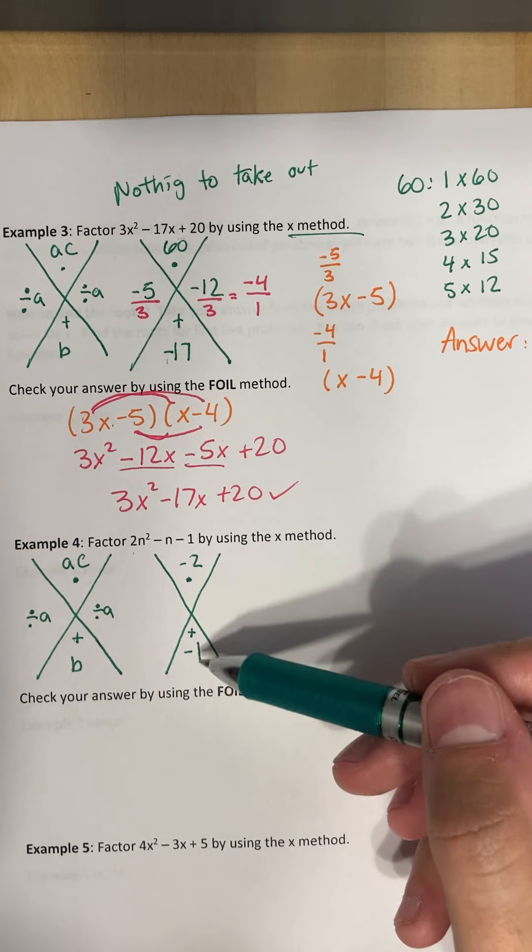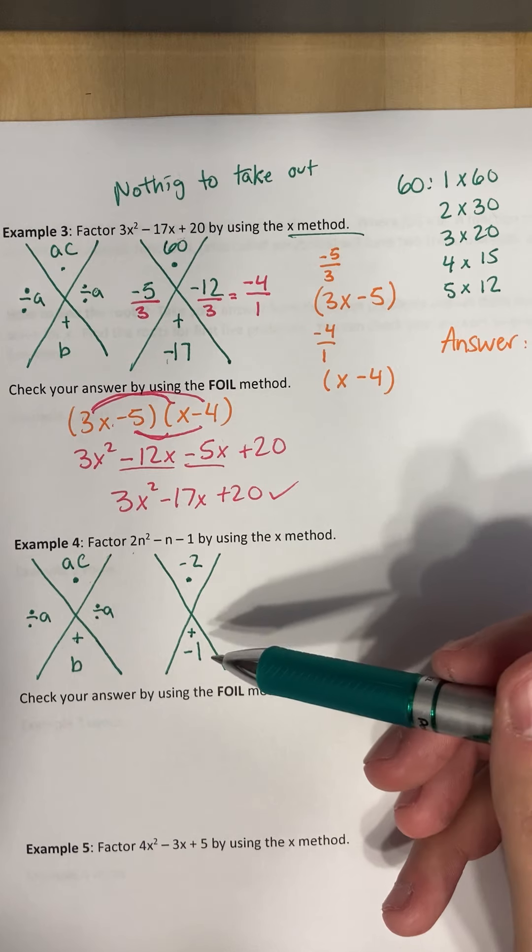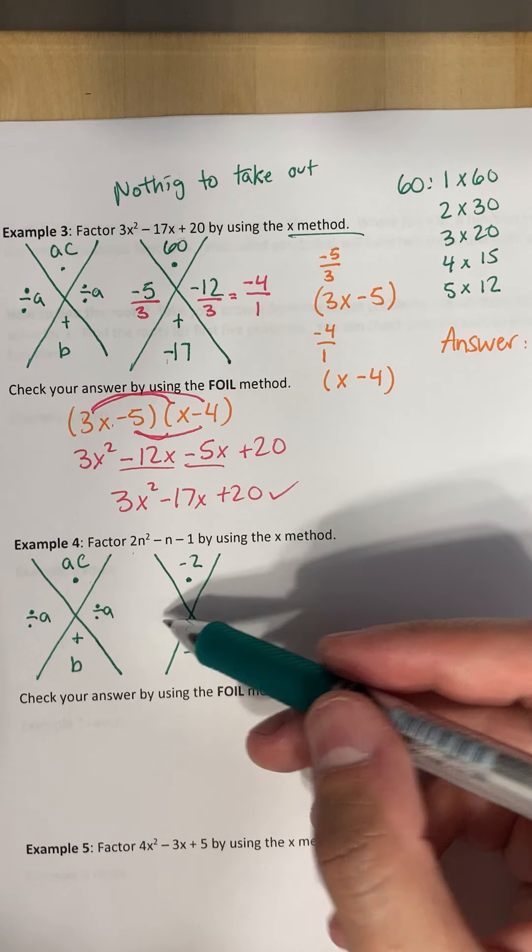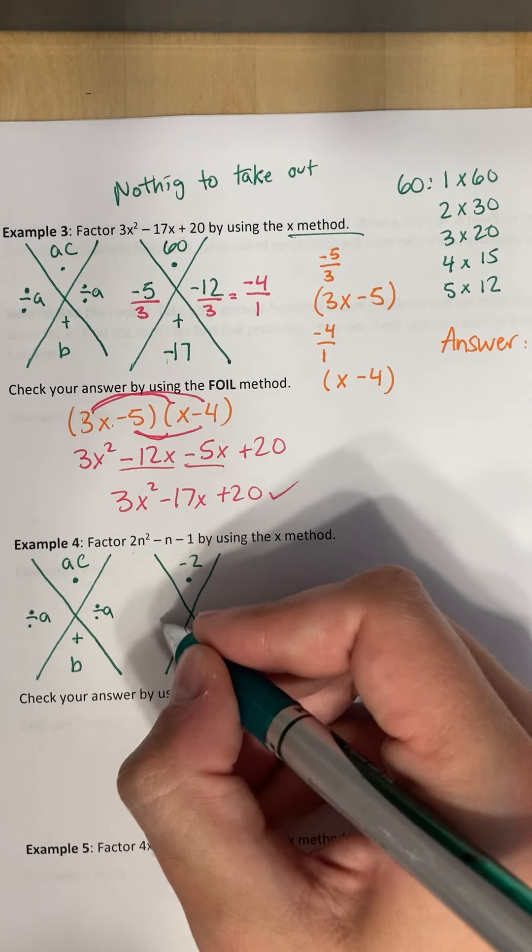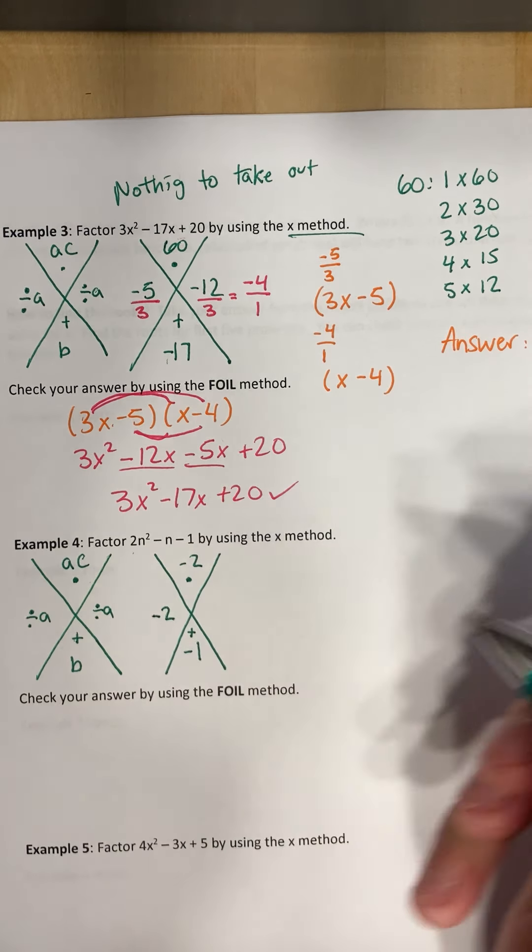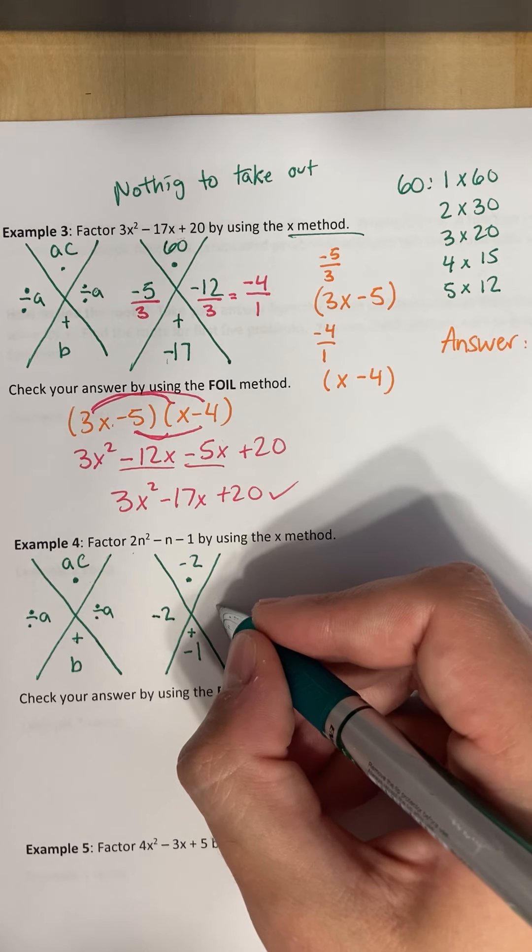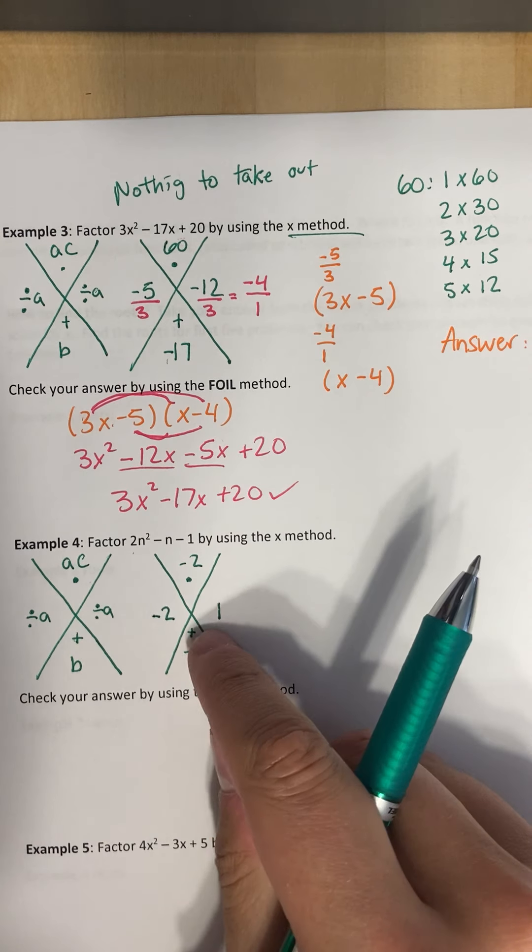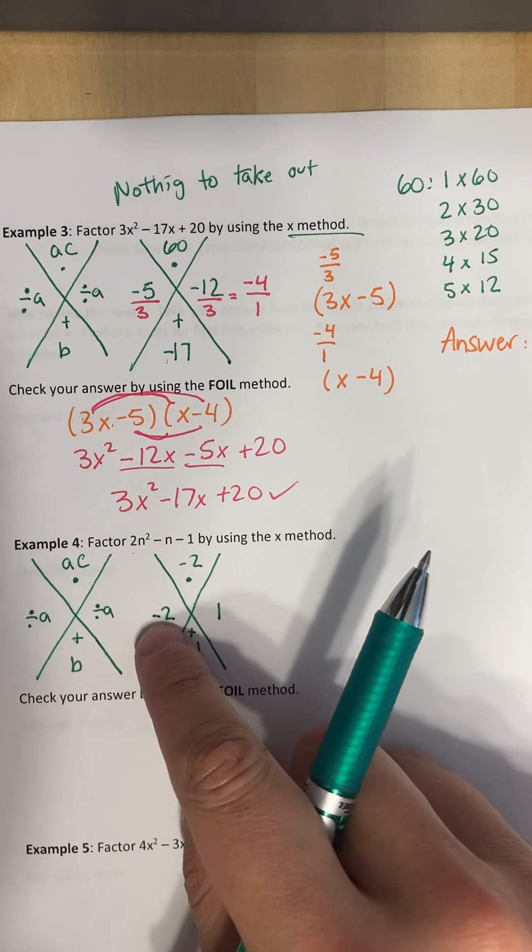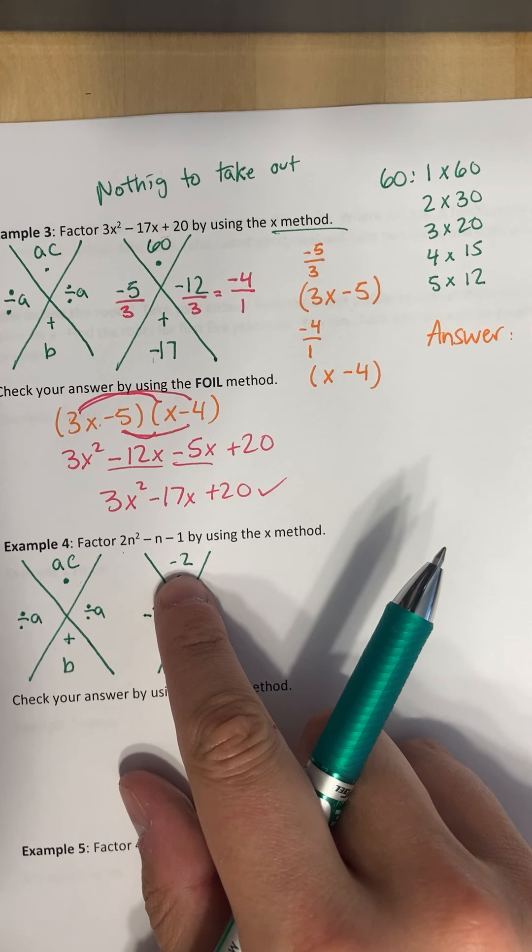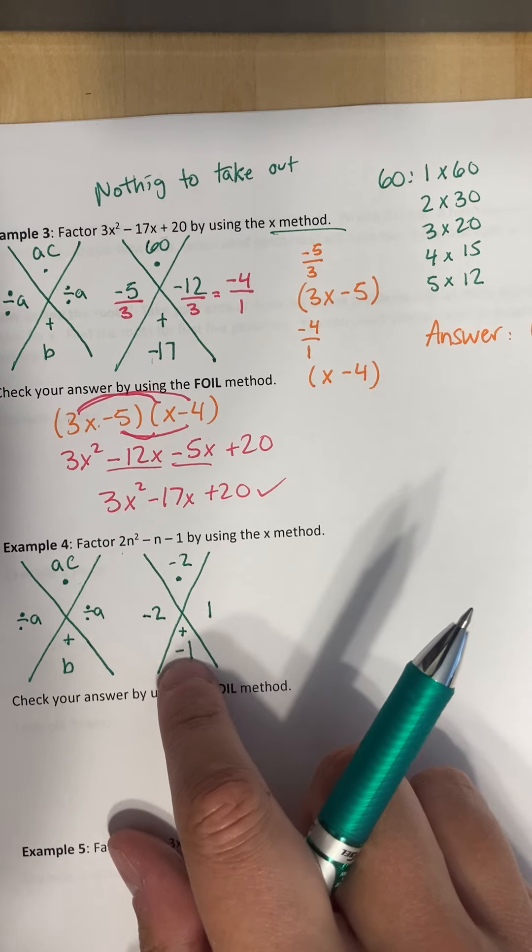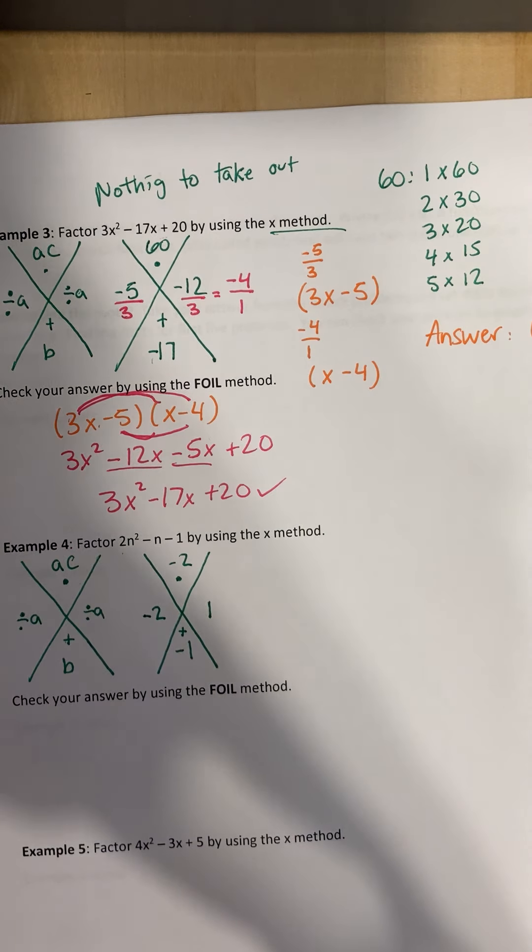And if you notice how these are both negative, since these are both negative, that's a clue that one of these numbers is going to be negative. One of them is going to be positive. Since we need this to be a negative one, we want our bigger number to be negative, and this other number is going to be smaller, or positive. So negative two times a positive one gives me negative two, and negative two plus one gives me a negative one.